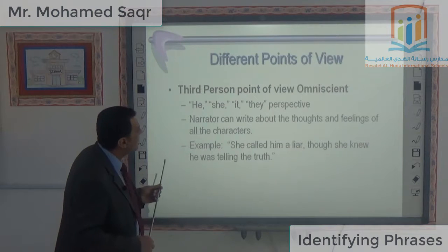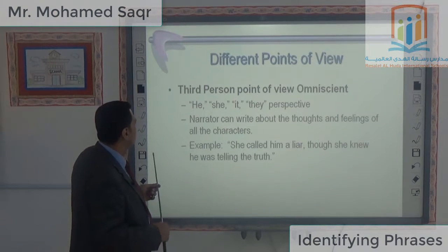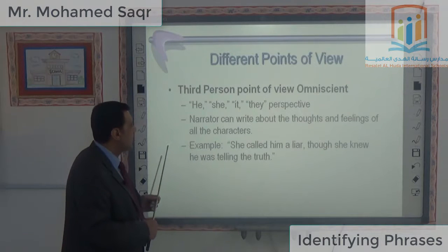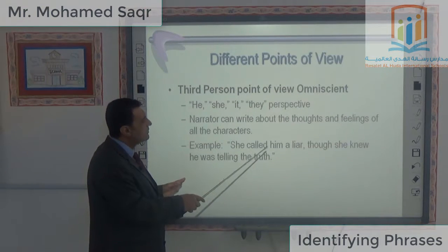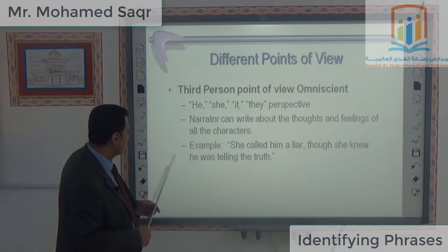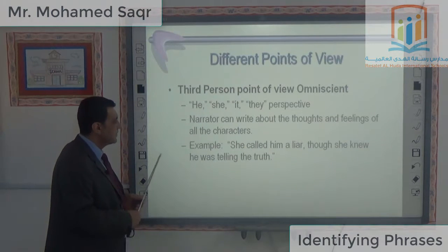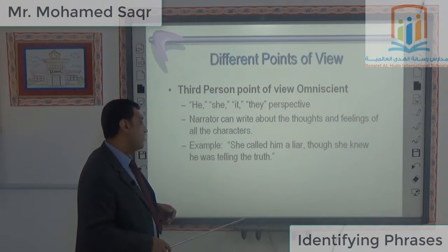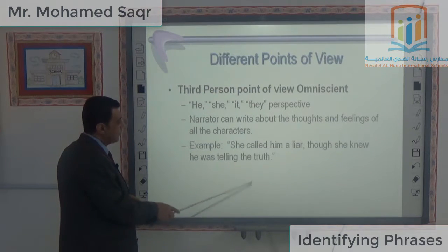In third person omniscient point of view, the narrator can write about the thoughts and feelings of all the characters. For example: 'She called him a liar, yet she knew he was telling the truth.'